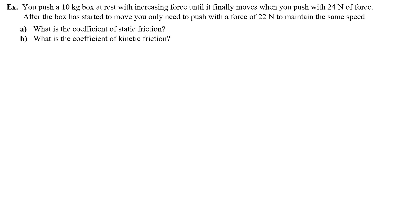Let's look at a simple example. You push a 10 kg box at rest with increasing force until it finally moves when you push with 24 newtons. After the box has started to move, you only need to push with 22 newtons to maintain the same speed. We are going to find the coefficient of static friction and the coefficient of kinetic friction. For static friction, the problem gives us information about the maximum static friction — when it finally moves at 24 newtons, that is FSmax.